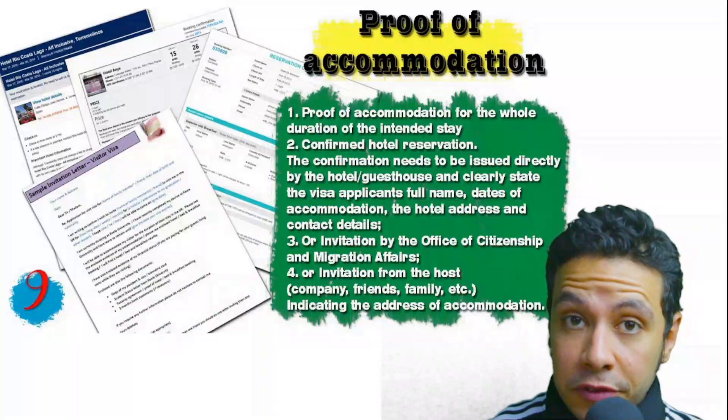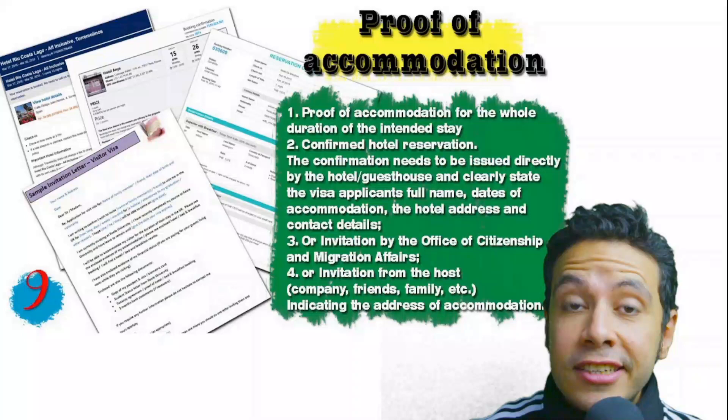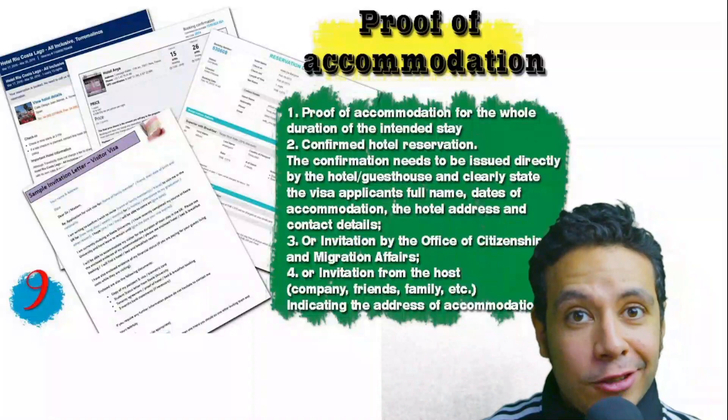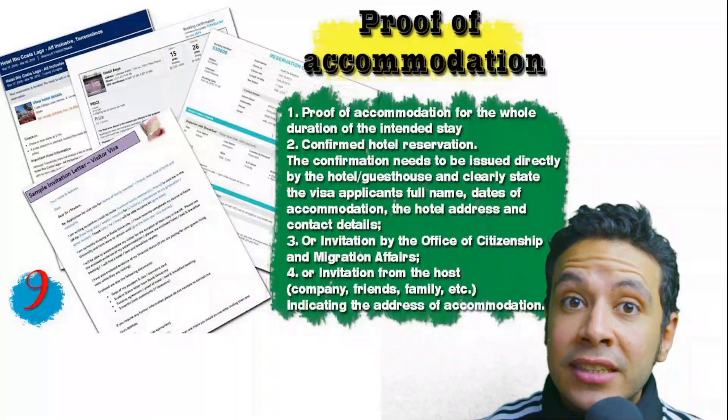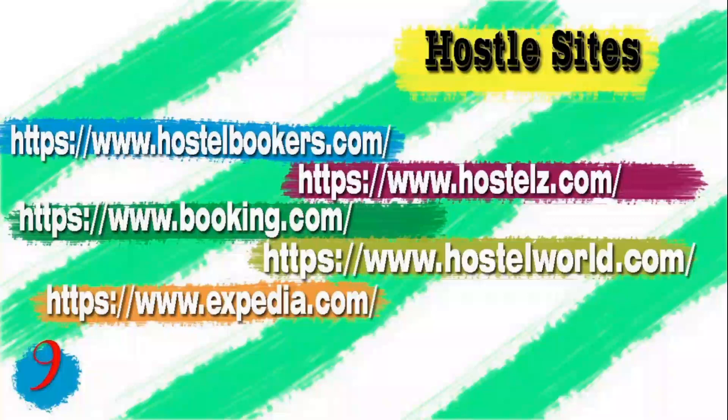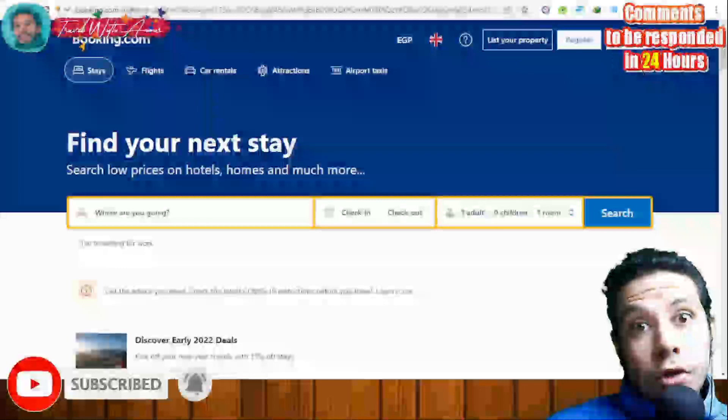You will also need to provide a proof of accommodation. It could be a confirmed hotel reservation, an invitation from a host in the country, or an invitation from an organization you are visiting. For a hotel or hostel, an initial booking is acceptable, but in some minor cases a confirmed booking may be needed. The name, address, and contact number of the hotel must be mentioned. If invited by a person, the invitation letter should be mailed to the embassy or submitted with a copy of that person's passport.